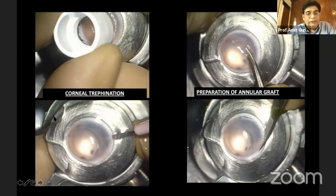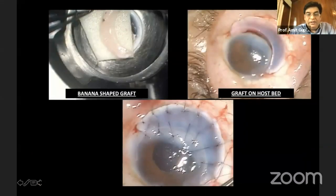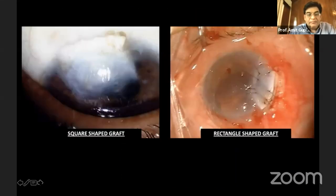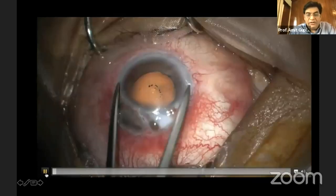Just to sum up the kind of corneal trephination: in this case, we are going in for a full thickness corneal trephination. We can use a blade and scissors to cut the graft to achieve the desired shape, and then suture it onto the cornea. Square or rectangular grafts have also done fairly well in patients with peripheral ulcerations.